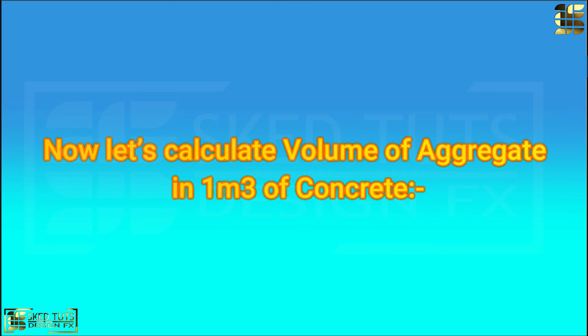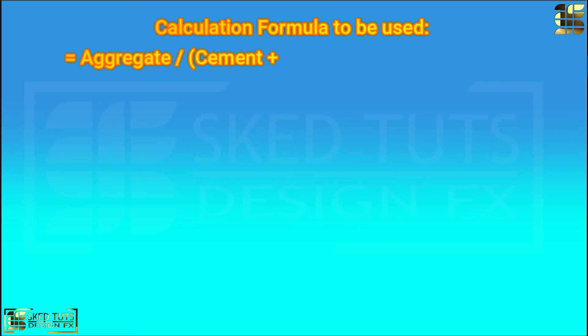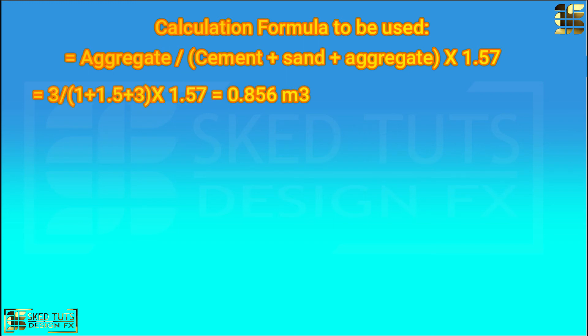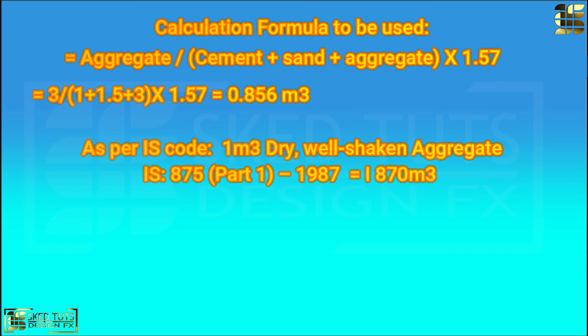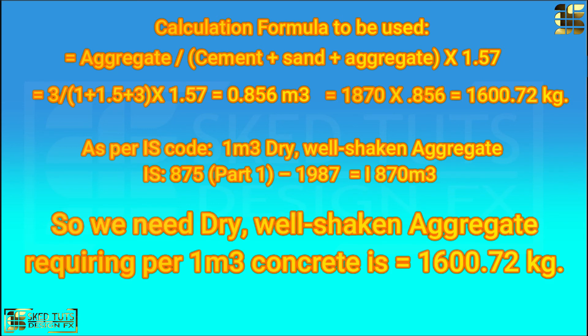Now let's calculate volume of aggregate in 1 cubic meter of concrete. Calculation formula to be used: Aggregate divided by cement plus sand plus aggregate into 1.57. 3 divided by 1 plus 1.5 plus 3 into 1.57 is equal to 0.856 cubic meter. As per IS code IS 875 part 1.1987, we know the 1 cubic meter of dry aggregate is 1870 kg per cubic meter. So 1870 into 0.856 is equal to 1600.72 kg.